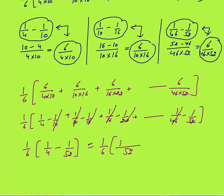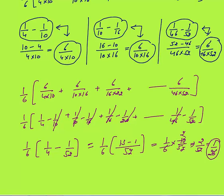So the answer is (1/6) × (1/4 − 1/52). Taking LCM of 52: (13−1)/52 = 12/52. Then (1/6) × (12/52) = 2/52 = 1/26. So 1/26 is the final answer.